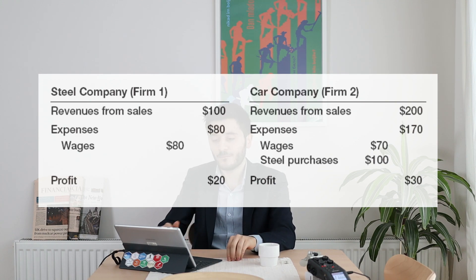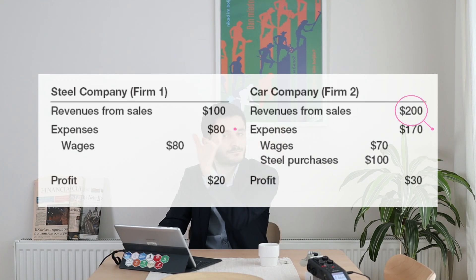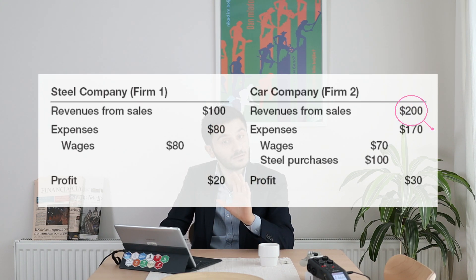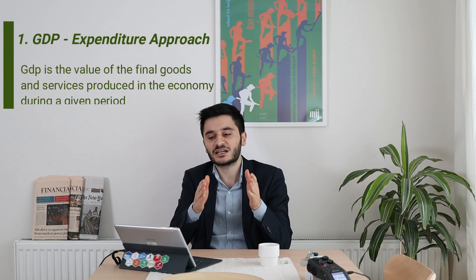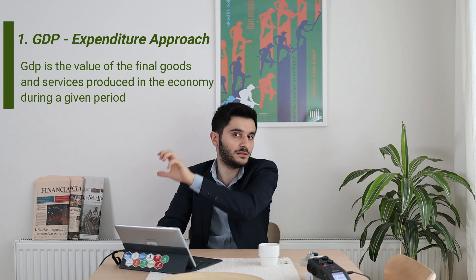Is aggregate output the sum of the values of all goods produced in this example, which is equal to 300? That is, 200 plus 100 equals 300. Or just the value of the cars, which is equal to 200? This is an important question. We know that steel is an intermediate good, which is a commodity used in the car industry, used in another sector.